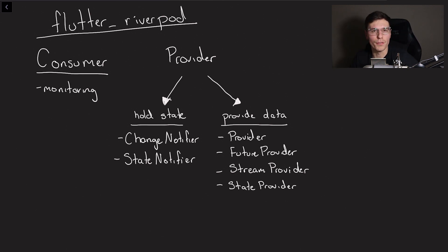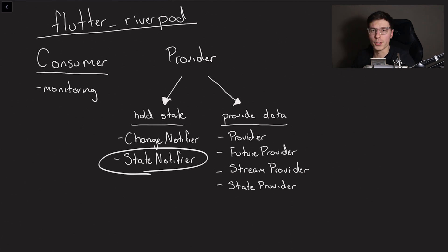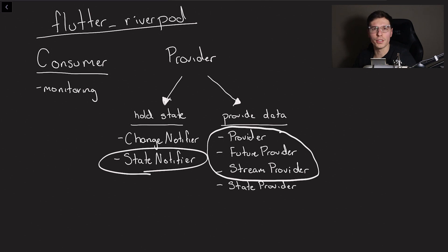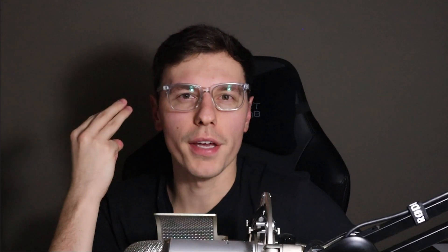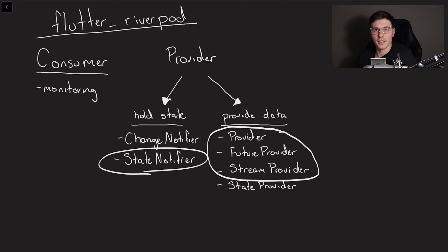We have a lot of options, but we probably don't need to use most of them. For holding and manipulating state, the immutable option that most experienced developers recommend is the state notifier. To provide data, I only use provider, future provider, and stream provider. So now RiverPod becomes a lot less complex: one package, one consumer, one way to maintain and manipulate state, and three ways to provide data. I want to reemphasize that these aren't the only things RiverPod does — there are provider listeners, provider observers, and more — but with these concepts, I haven't run into a scenario I can't accomplish.